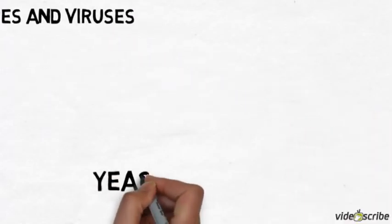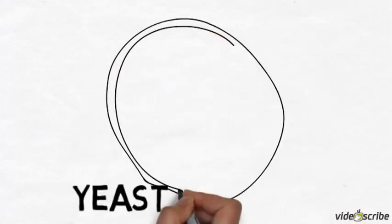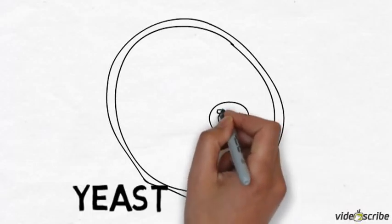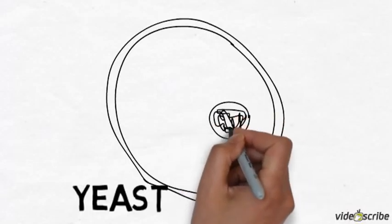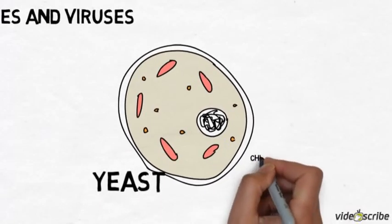The first cell we're going to look at is a yeast cell. Now a yeast cell is a single-celled fungus and it looks very much like an animal cell. The only difference is that it has a chitin cell wall, so it doesn't have chloroplasts like a plant, but it does have a cell wall. The cell wall is not made from cellulose but from chitin.